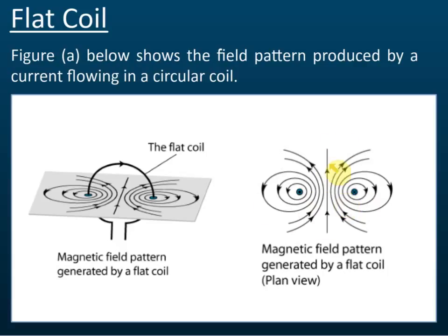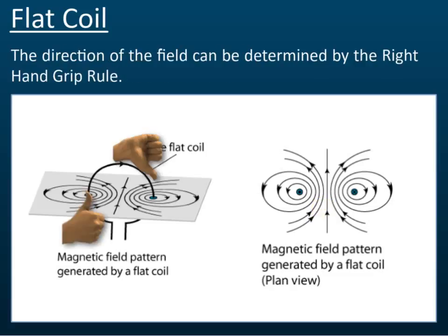In the exam, you need to know not only the patterns but also the directions. To determine the directions, we use the right-hand grip rule. For example, at this point the current is going up — grip the wire with your right hand and the other fingers show the direction of the field, which is counterclockwise. For the wire where the current goes down, the fingers show the field direction is clockwise.